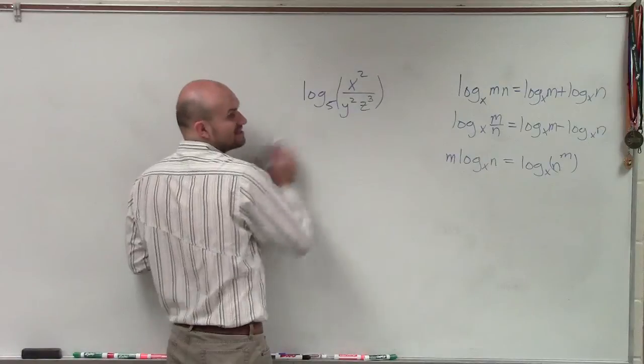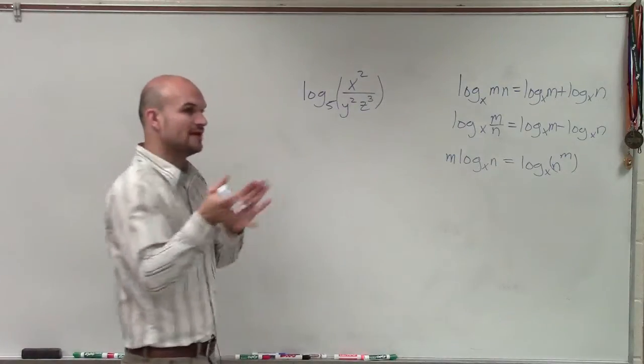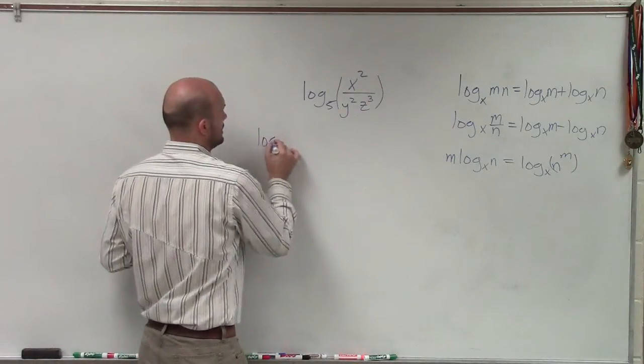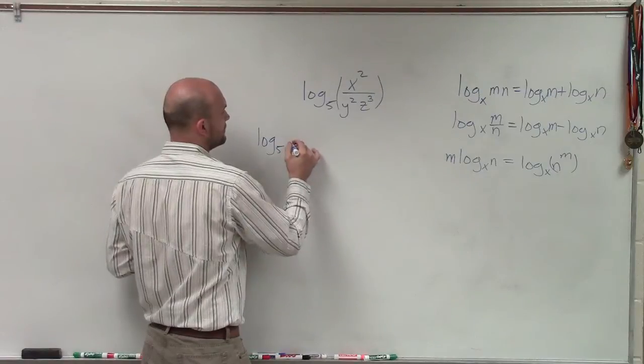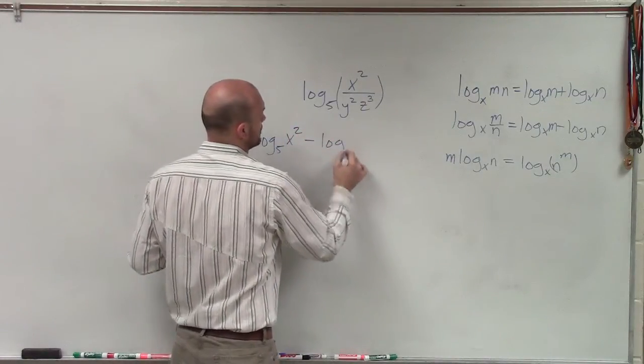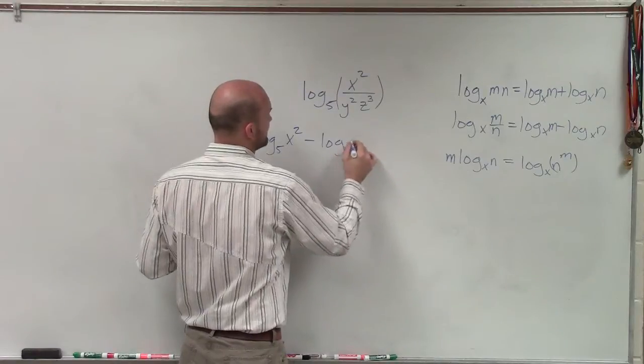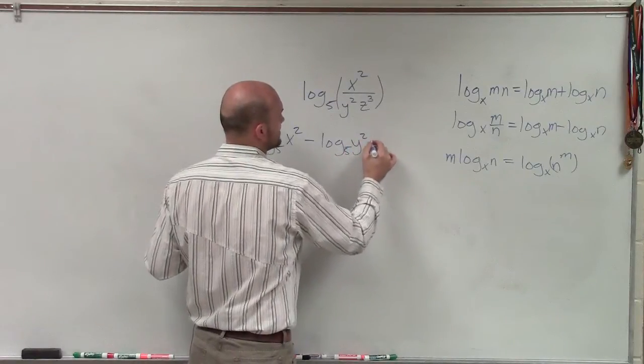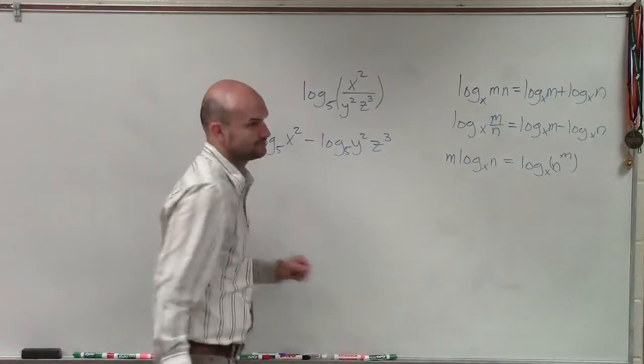So immediately what I see here is I see this division symbol. I know that I can break this up into log base 5 of x squared minus log base 5 of y squared times z cubed.